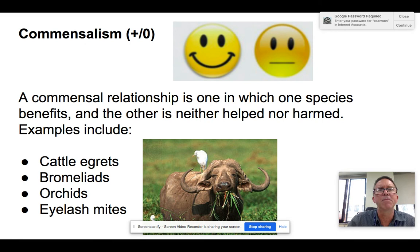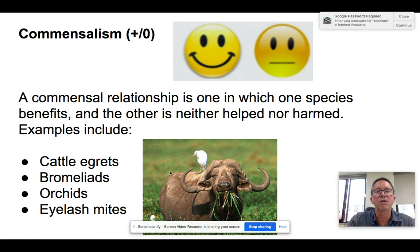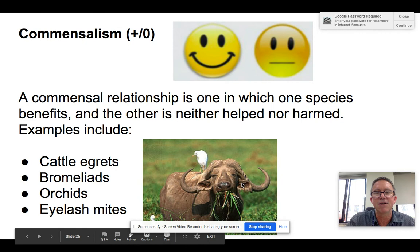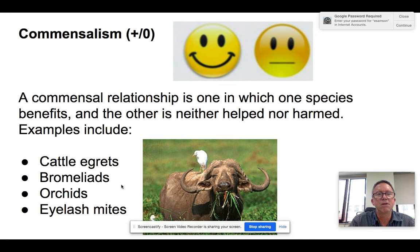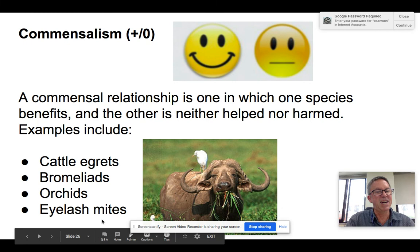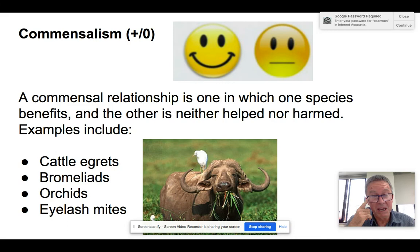Then we have commensalism — not that common, but basically one benefits and the other is unaffected. A classic example is cattle egrets: these birds hang out around a buffalo, the buffalo walks through the grass and stirs up bugs, which the egrets then eat. They're benefiting because they're getting food, but they're not doing anything for the buffalo. Another example is bromeliads and orchids that grow on trees — they don't hurt the trees, but the trees help them out. And then there are eyelash mites — you've got little mites that live in your eyelashes, drinking the oils that come out of them. You get nothing out of it, but they get to drink your eyelash juice.